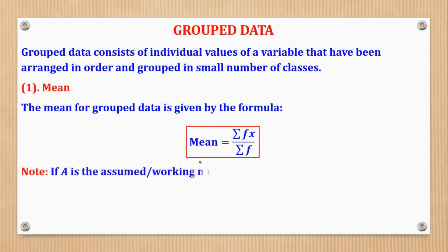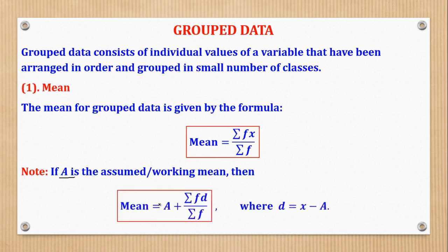Sometimes they can give you an assumed mean. For example, they can tell you to calculate mean given a working mean of 45. When you are given a working mean, capital A is your working mean, so if it's 45 then A equals 45. Then you say mean equals A plus summation of fd over summation of f. Previously we were using fx; now we are using fd. Here d equals x minus capital A, where A is the assumed mean and x is the mid mark.